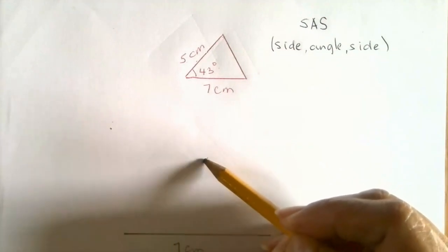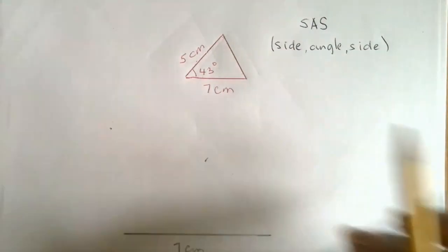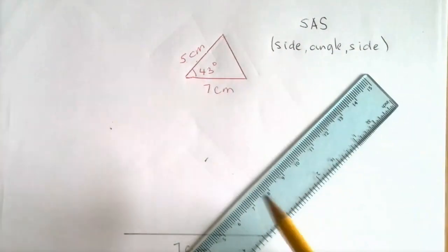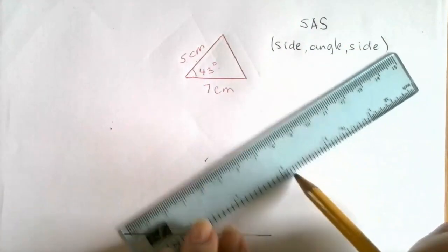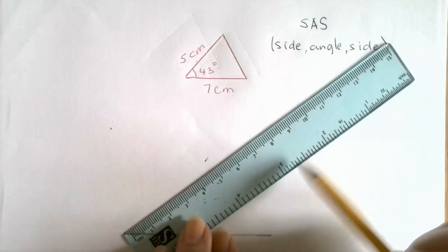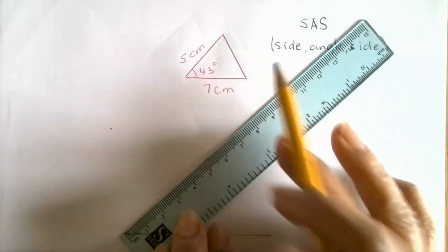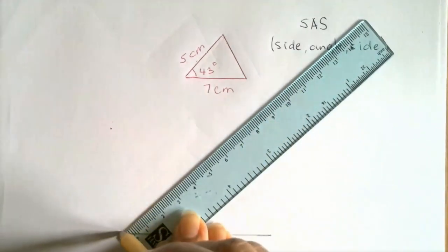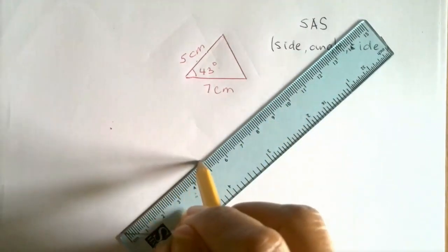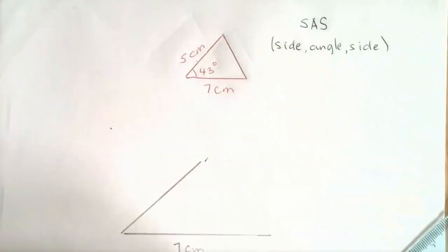Now we're going to get a ruler and measure your five centimeter side and make sure your ruler is positioned such that it hits where the angle is being marked. So that's your five centimeter side and this is your 43 degree angle.